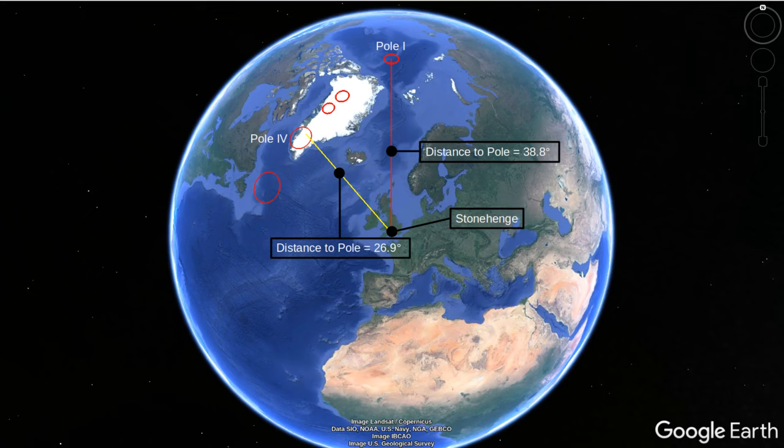The distance from Stonehenge to pole 4 is much less than the distance from Stonehenge to our current geographic pole, pole 1. That means that the latitude of Stonehenge at the time it was built was much different. A different latitude means other solstice angles. The distance from Stonehenge to pole 4 would mean that Stonehenge was originally built at a latitude of 63.1 degrees.